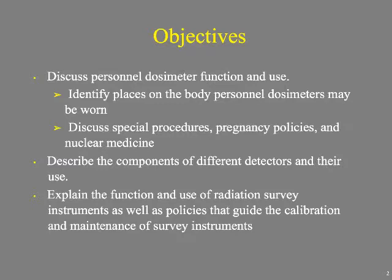The objectives include personnel dosimeters — where they should be worn, special procedures, and pregnancy policies — as well as nuclear medicine specifics. We'll look at different detectors, particularly the ones most important to us in the hospital, and cover radiation survey equipment, calibration, and the survey instruments themselves.